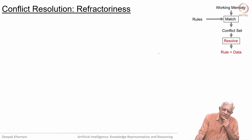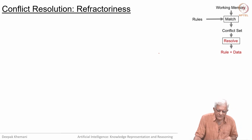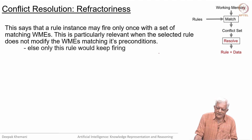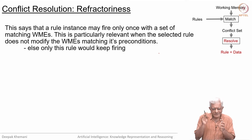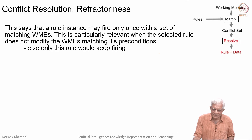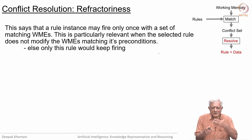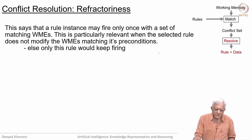The first strategy, which is necessary in fact, is called refractoriness. It says that a rule instance may fire only once with a set of matching working memory elements. You have found that this rule instance matches this piece of data and you can fire it, but you cannot keep firing the same rule again and again with the same piece of data. Assuming the actions of the rule are not deleting anything from the working memory, the rule would still match again after firing. Refractoriness says this is not allowed; otherwise there is always the danger that one single rule will keep firing all the time.